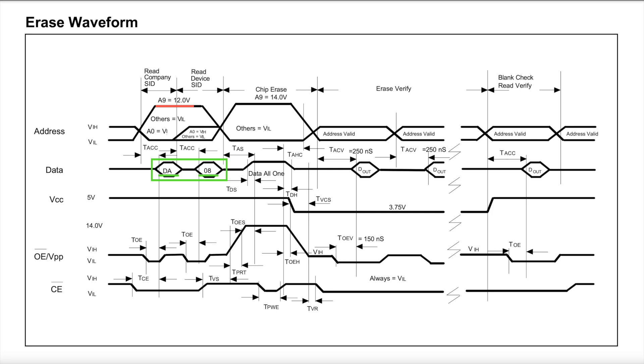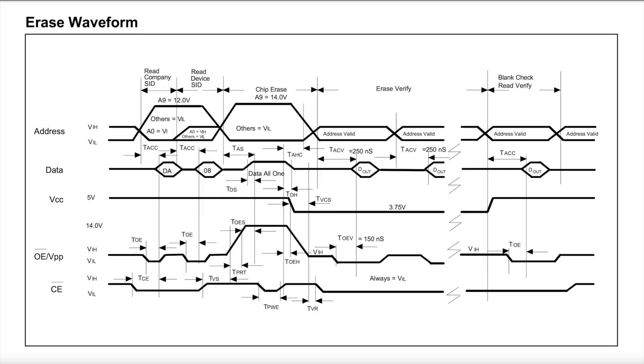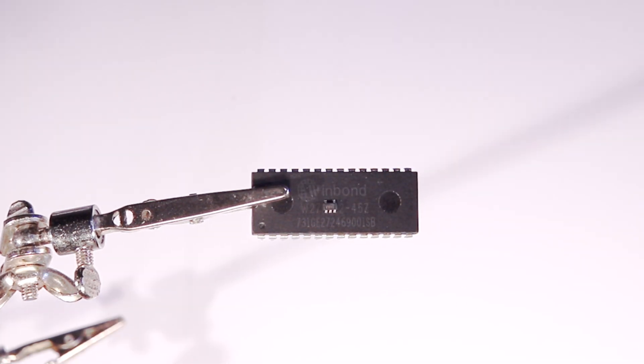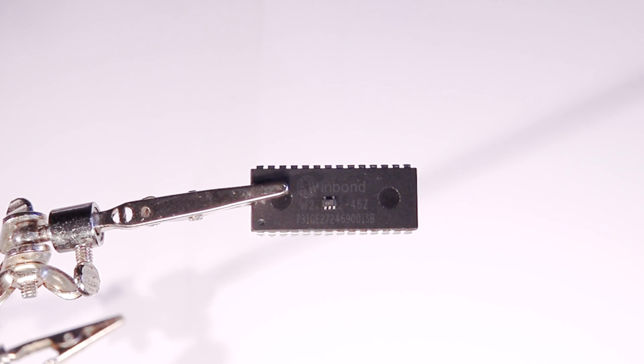But where things get a bit more complicated is the next step, where we need to up the voltage on A9 to 14 volts, and also put 14 volts on the programming voltage pin, which is normally the output enable pin. If we assume we have some computer or microcontroller available that can supply the normal 5 volt signals, we're still missing something that'll supply the higher voltage. Luckily, we have these tiny little switching boost converters that'll probably do the job just fine.